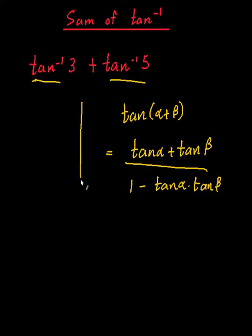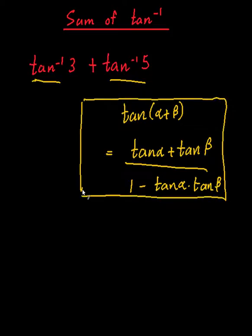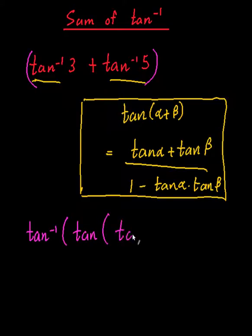So we are going to be using this identity in this process. Okay, so how do you use this? Because the trick is to go, this function over here, it doesn't matter if I say that's the same as saying tan inverse of tan of what it was in there, of tan inverse of 3 plus tan inverse of 5. The reason being, tan and tan inverse, they undo each other because they're inverses of each other.